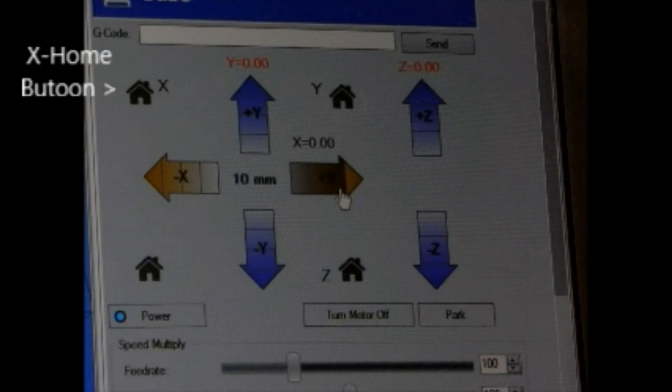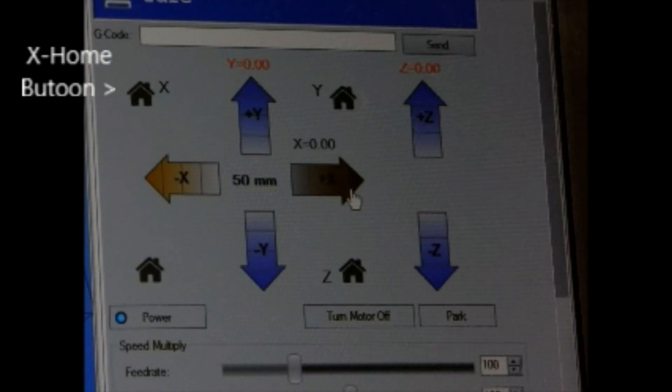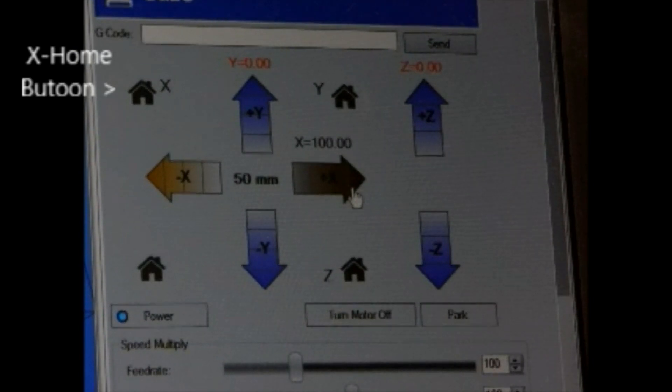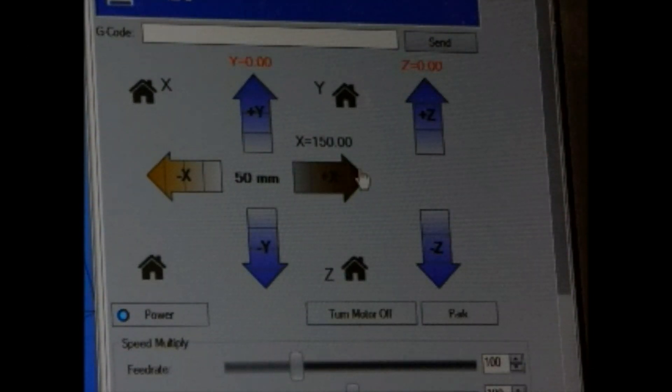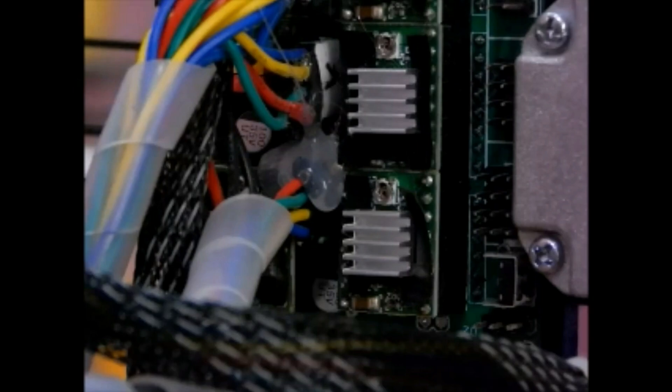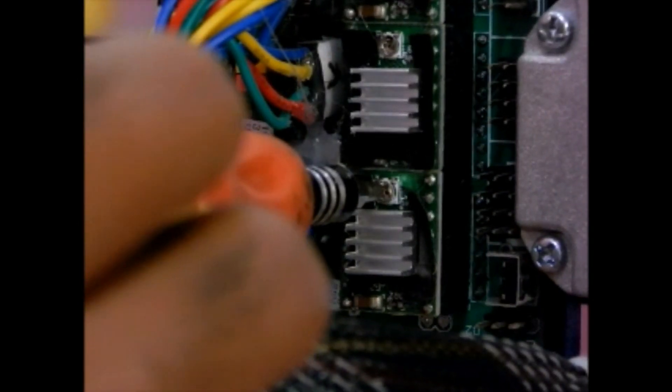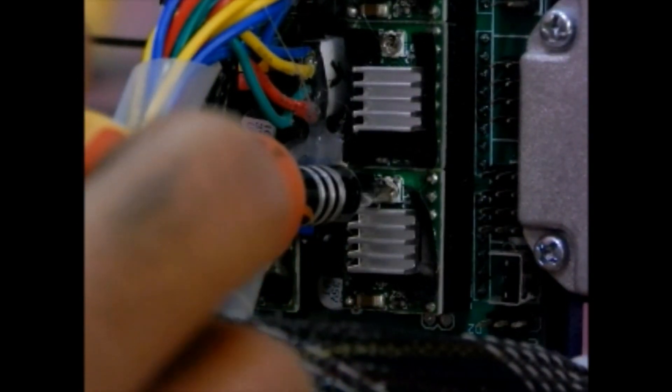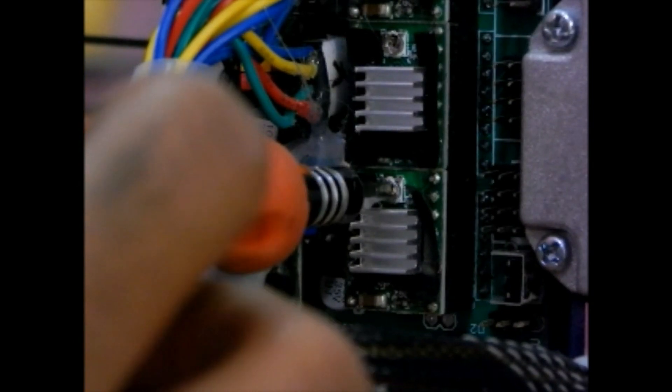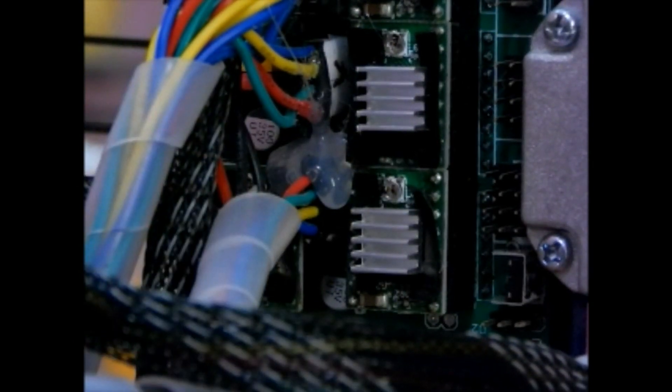In Pronterface or Repetier Host, click the X axis home button. Then set the X movement for 150 mm towards right direction. Now, turn the preset towards your left, that is anti-clockwise direction.